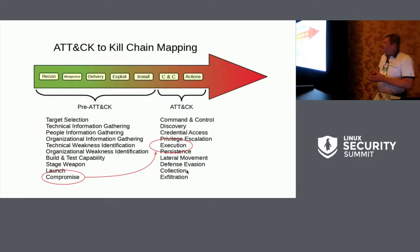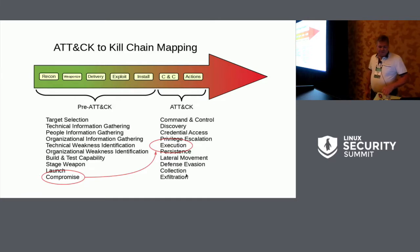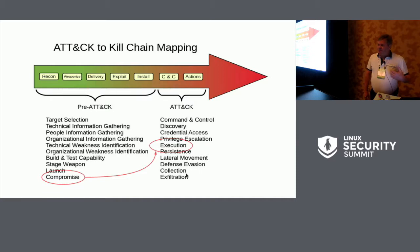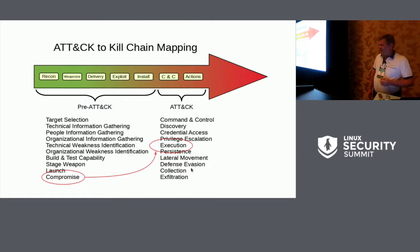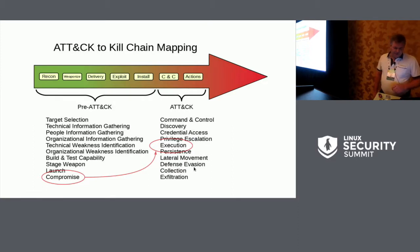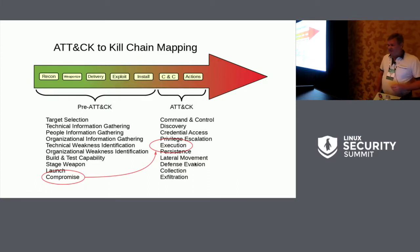If you look at the Lockheed Martin kill chain or the MITRE ATT&CK framework, which describes the way intrusions happen and what they try to do, the place where application whitelisting sits is right between compromise and execution — and that's the area we're able to target. Should they get past execution, we'd be targeting everything on the right-hand side of the chain as well.